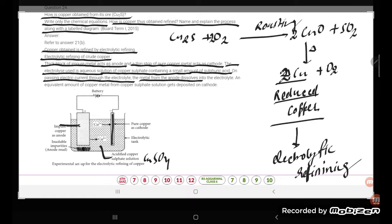The metal from the anode dissolves into the electrolyte, and an equivalent amount of copper metal from the copper sulphate solution gets deposited at the cathode.